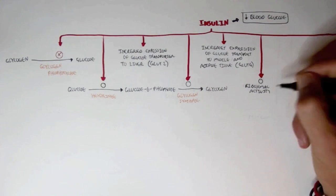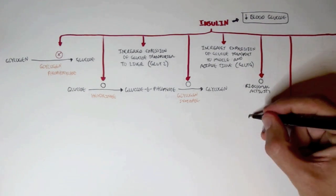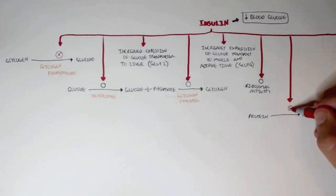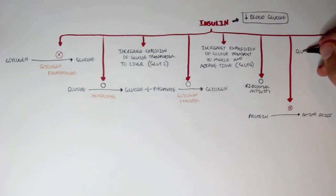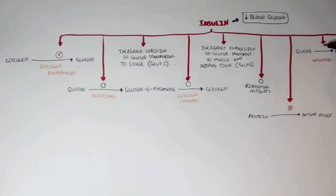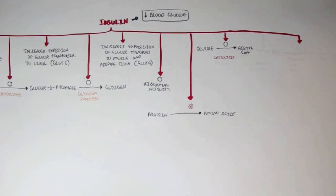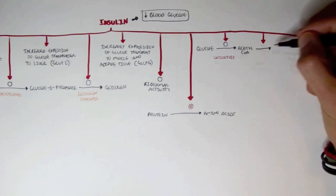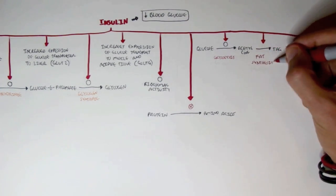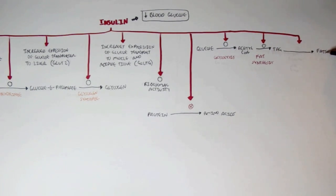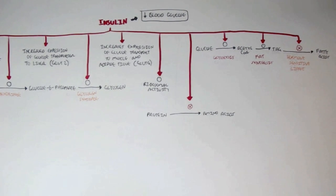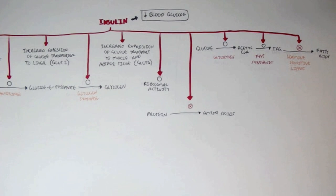Insulin stimulates ribosome activity to synthesize proteins, and also inhibits protein degradation, as it wants to store excess energy including amino acids. Insulin promotes the conversion of glucose to acetyl-CoA via glycolysis, promotes fatty acid synthesis from acetyl-CoA to triacylglycerols, inhibits hormone-sensitive lipase (which is responsible for the degradation of triacylglycerols and fatty acids), and prevents beta-oxidation — the conversion of fatty acids into acetyl-CoA.